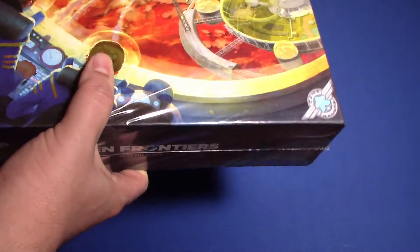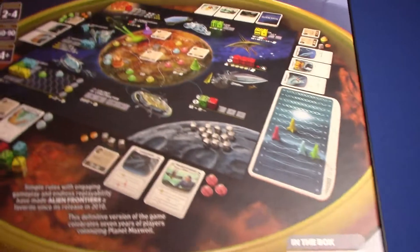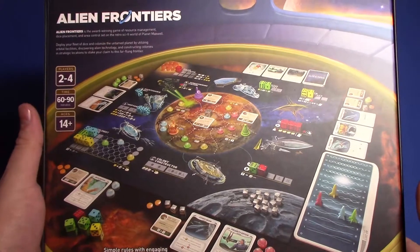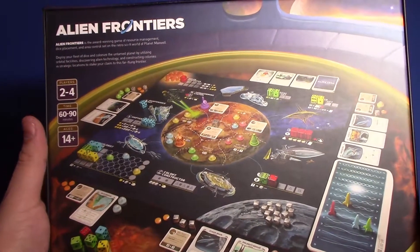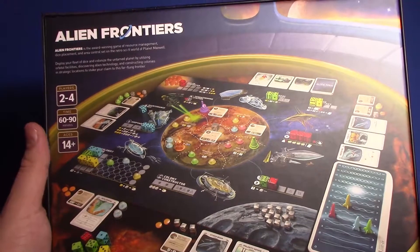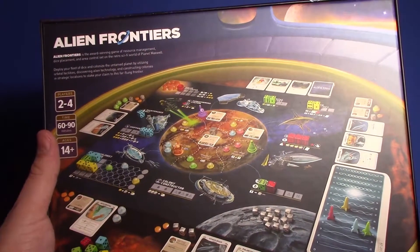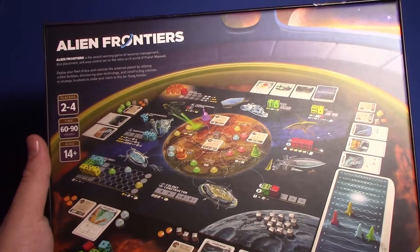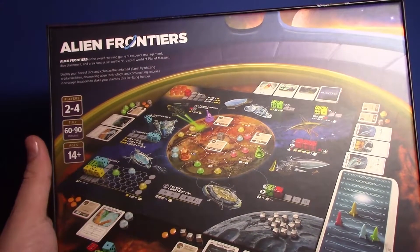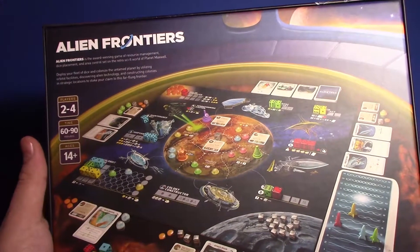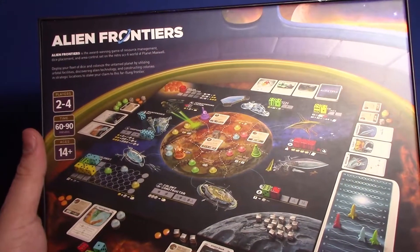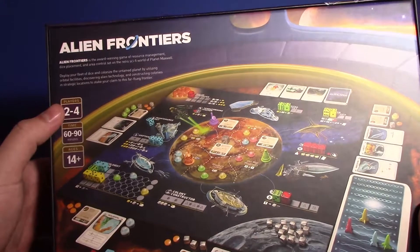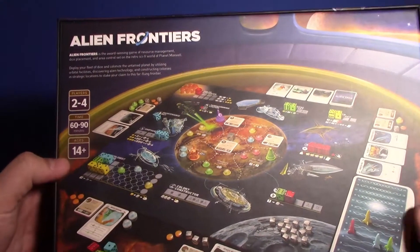So let's pop this puppy open and see what's inside. We've got on the back a whole lot of stuff going on. It says Alien Frontiers is the award-winning game of resource management, dice placement, and area control set on the retro sci-fi world of Planet Maxwell. Deploy your fleet of dice and colonize the untamed planet by utilizing orbital facilities, discovering alien technology, and constructing colonies in strategic locations. Two to four players, 60 to 90 minutes, ages 14 plus.